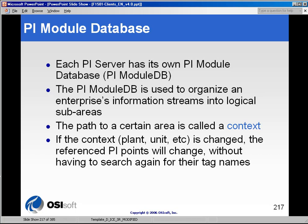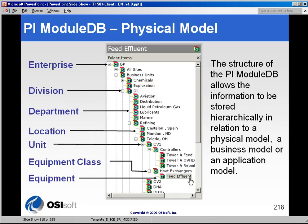What the module database does is give context to your facility, structure, or process, and you can build it out any way you want. Here's a module database built out in what we refer to as a physical model, where a corporation builds out their model based on division, department, and individual locations, and they build out each location with the units and equipment.